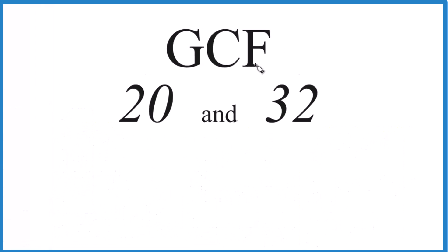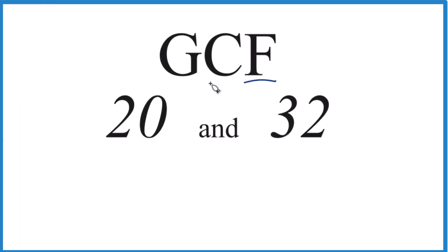What we do is find all the factors for 20 and 32, look at the common factors, and then choose the greatest one. That's the GCF.